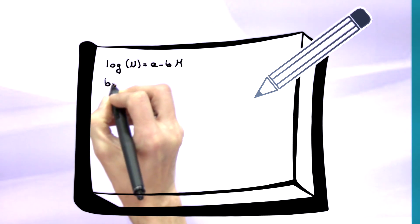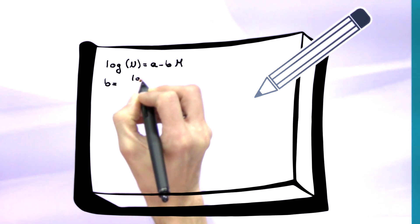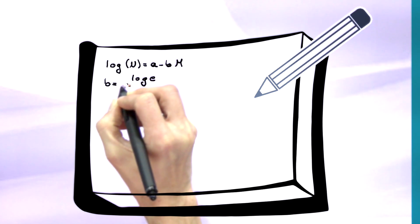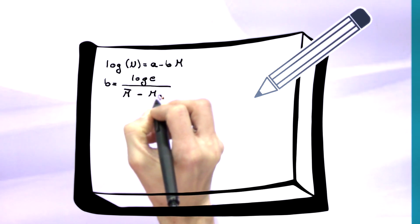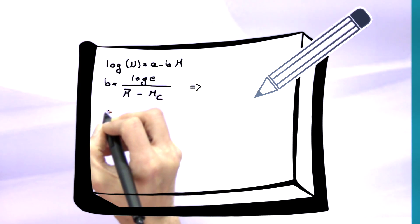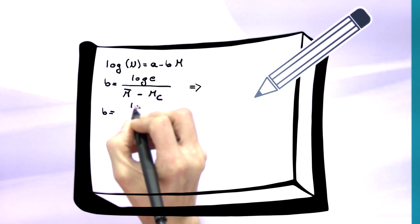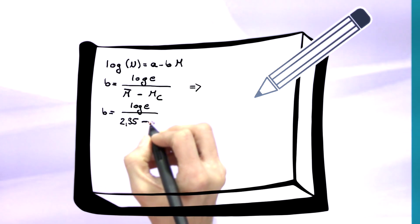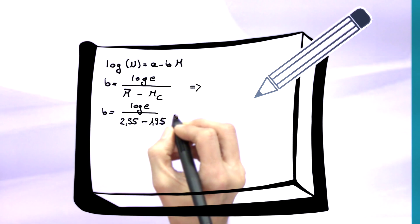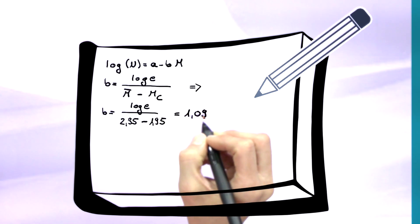b equals the decadic logarithm of E divided by the mean magnitude m-bar minus the smallest completely used magnitude mc. Substituting the mean magnitude 2.35 from before and mc equals 1.95, we get a b-value of 1.09. This is very close to a value of 1, which in this case says that 10 times less magnitude 3 quakes occur than magnitude 2 quakes.